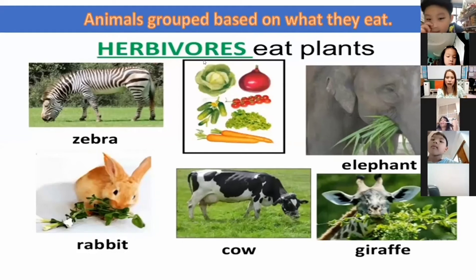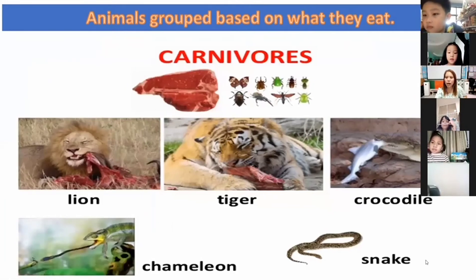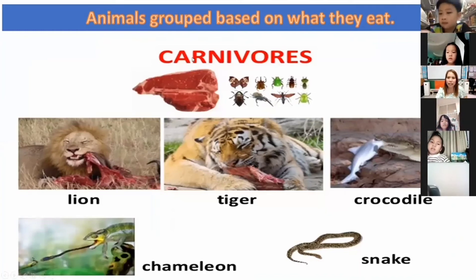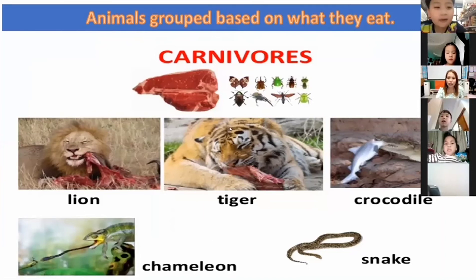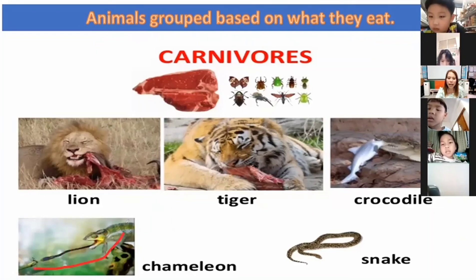The next set of animals are carnivores. Carnivores are snake, crocodile, tiger, lion, and chameleon. Do you know what a chameleon is? It's like a lizard. Yes! It eats plants? No — a chameleon eats a lot of insects, yeah, like frogs.